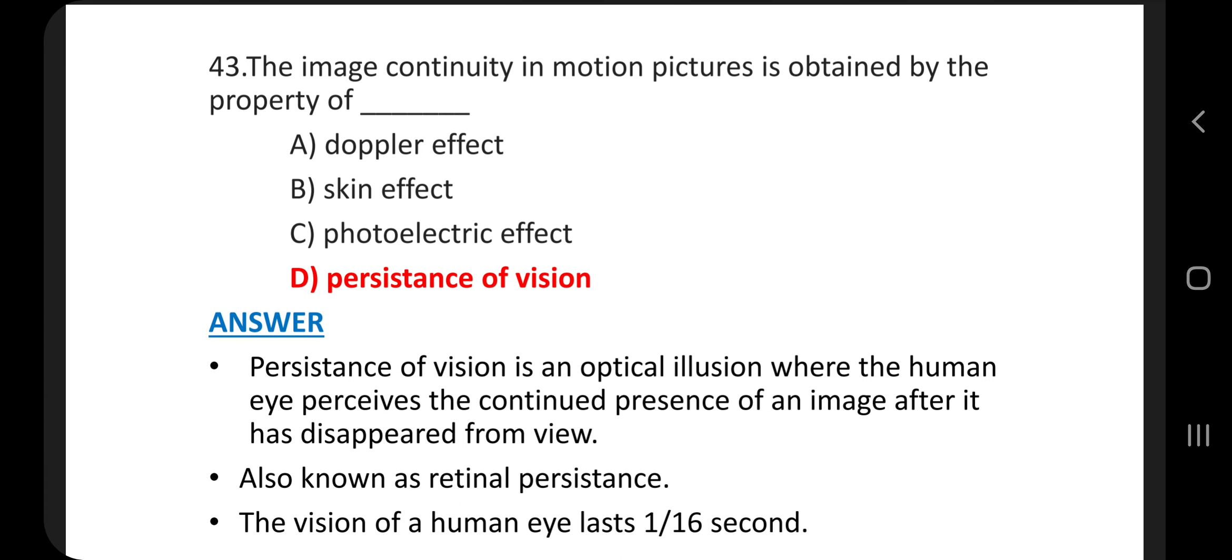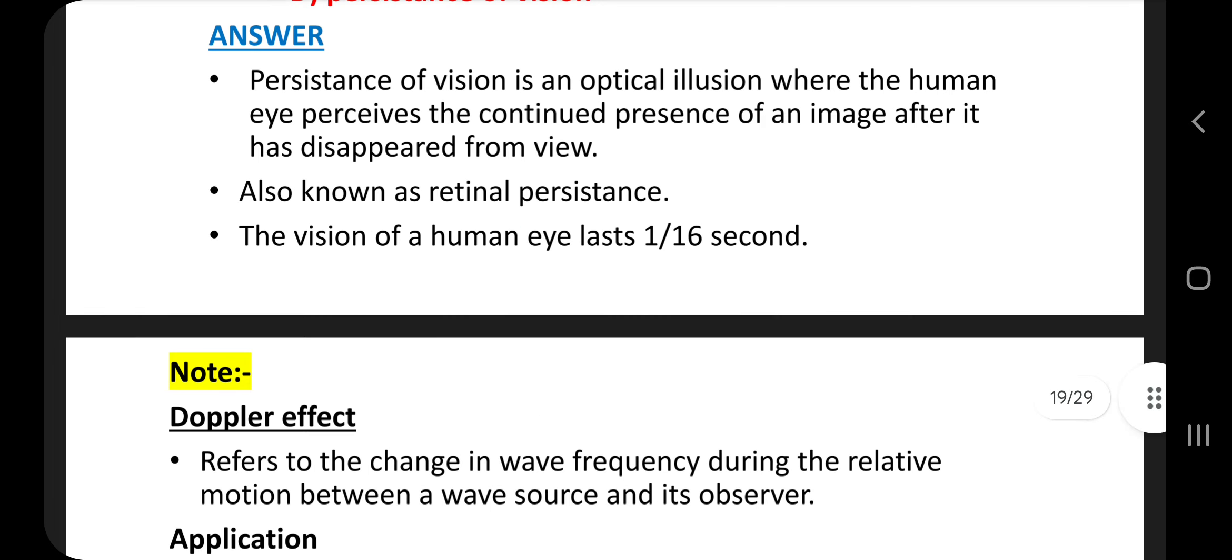Question 43. The image continuity in motion pictures is obtained by the property of answer D, persistence of vision. What is persistence of vision? It is an optical illusion where the human eye perceives the continued presence of an image after it has disappeared from view. Also known as retinal persistence, the vision of a human eye lasts 1 by 16th second.